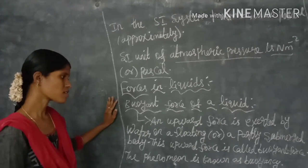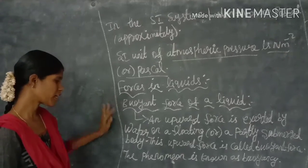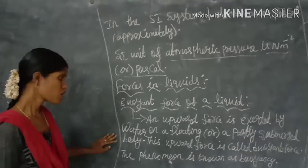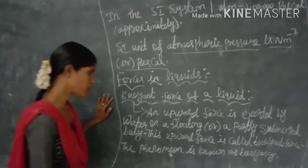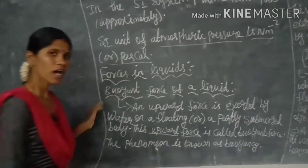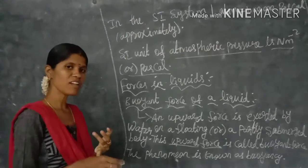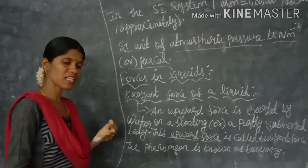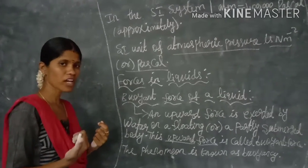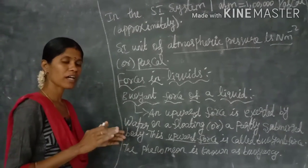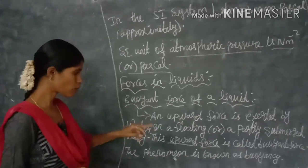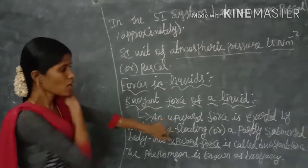The buoyant force is exerted by water on floating or partly submerged bodies — where the body refers to any object or material. This upward force is produced when water is displaced from a container or vessel, and that force is referred to as the upward force.